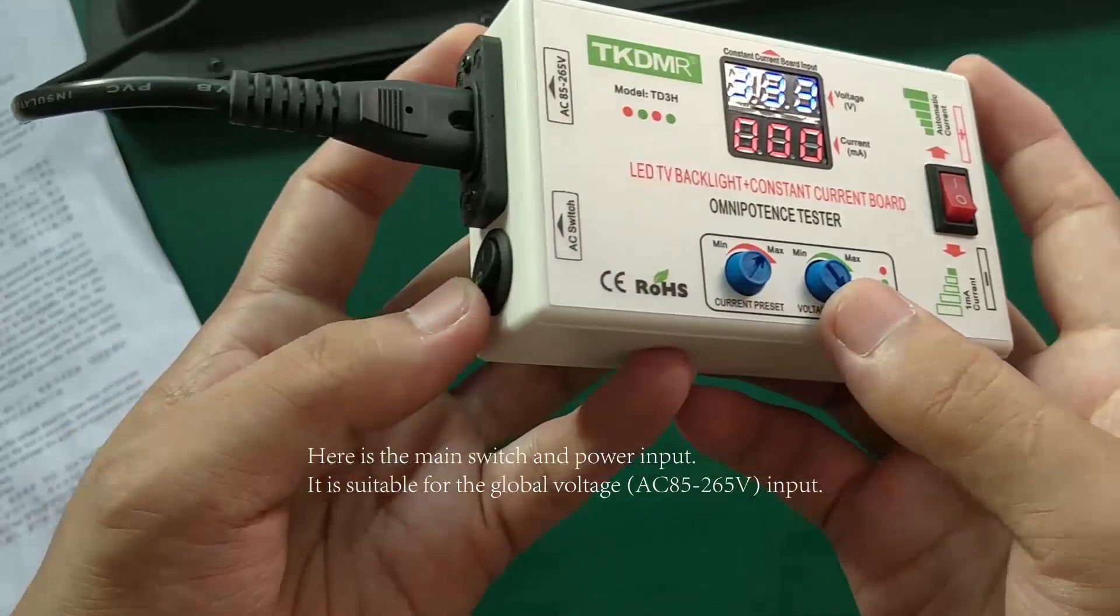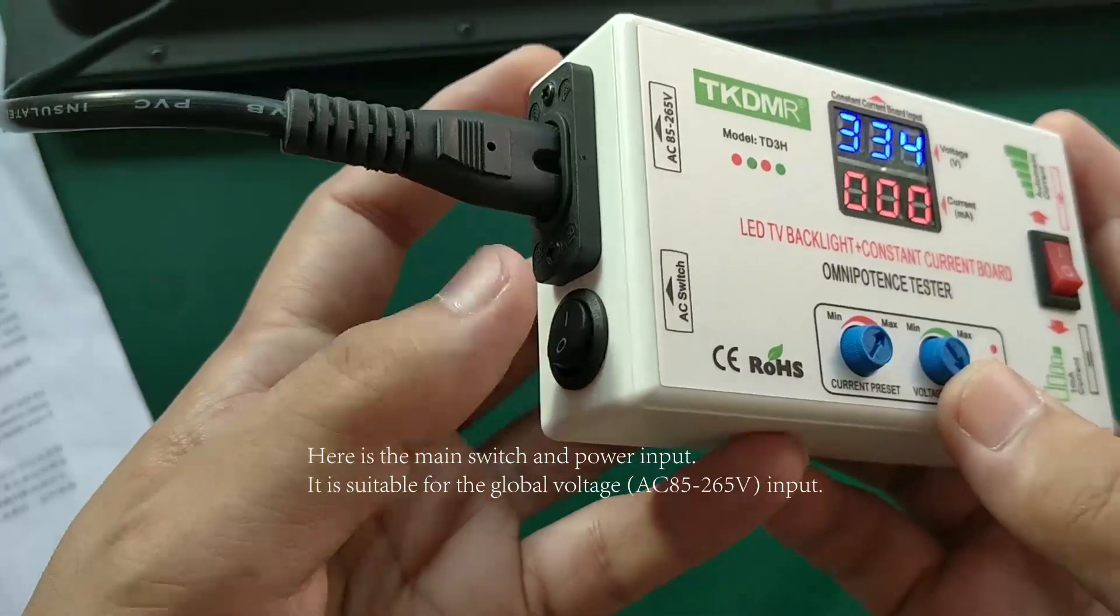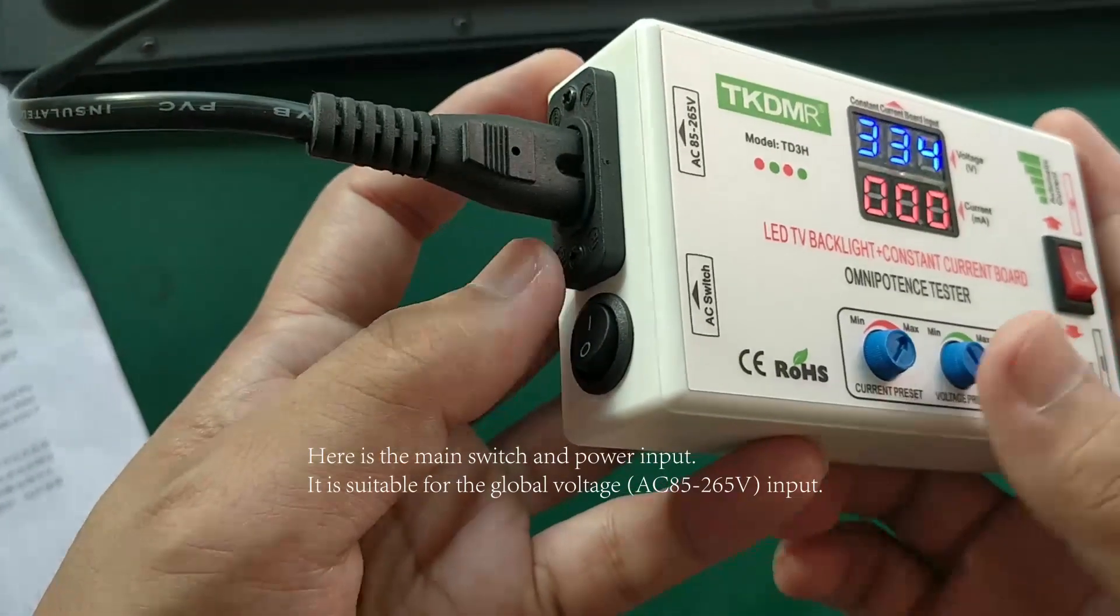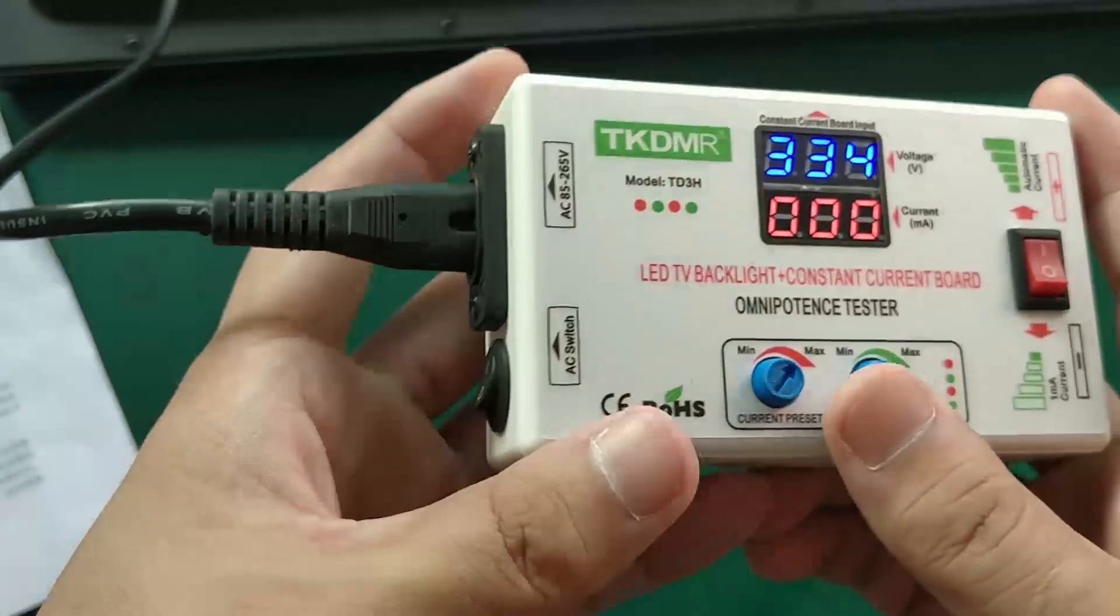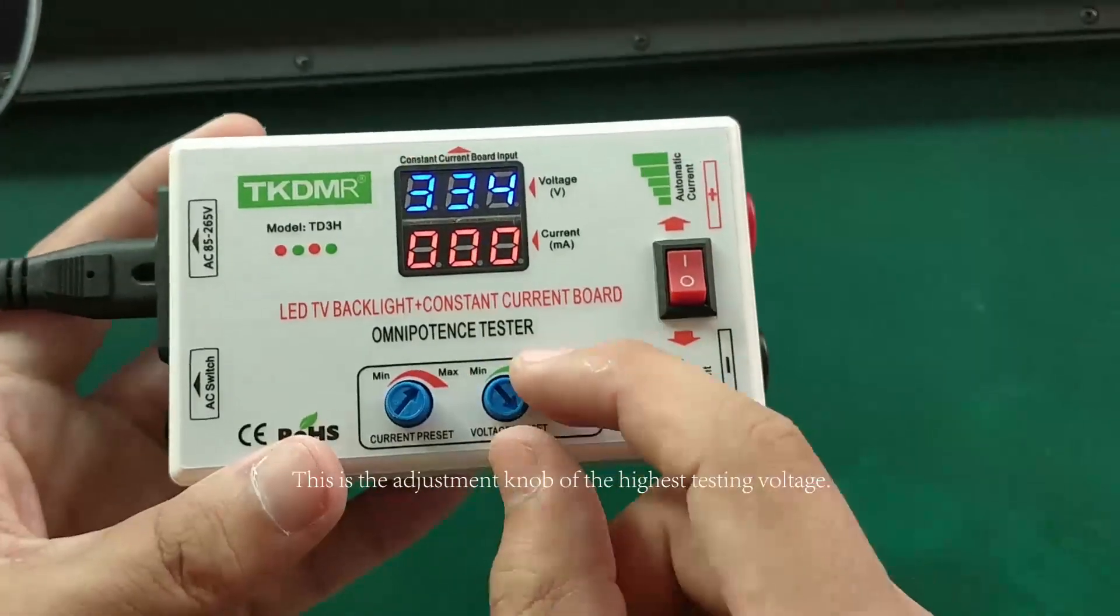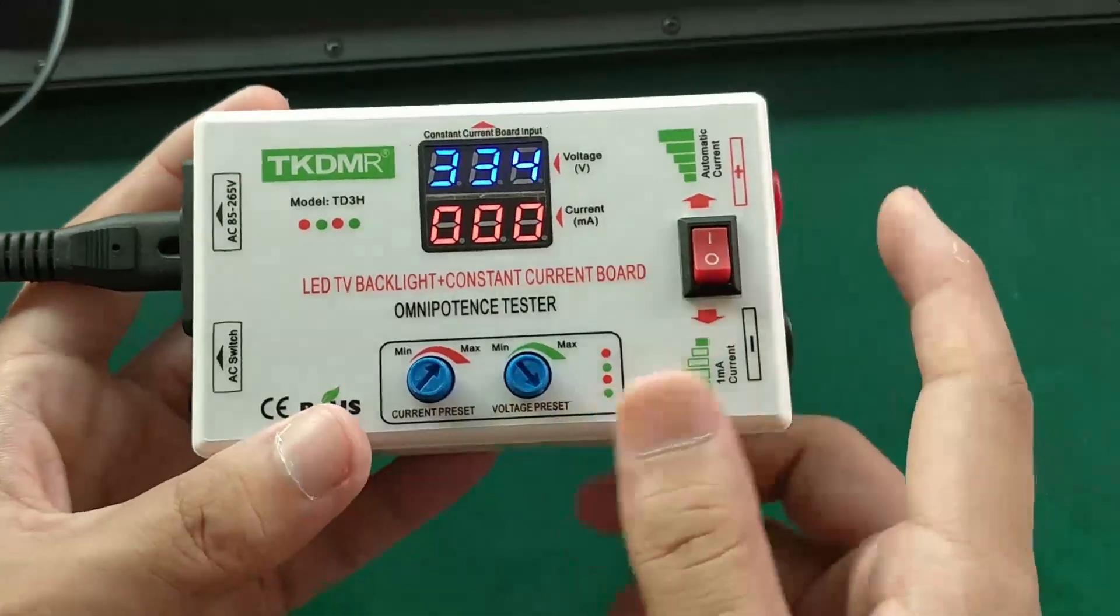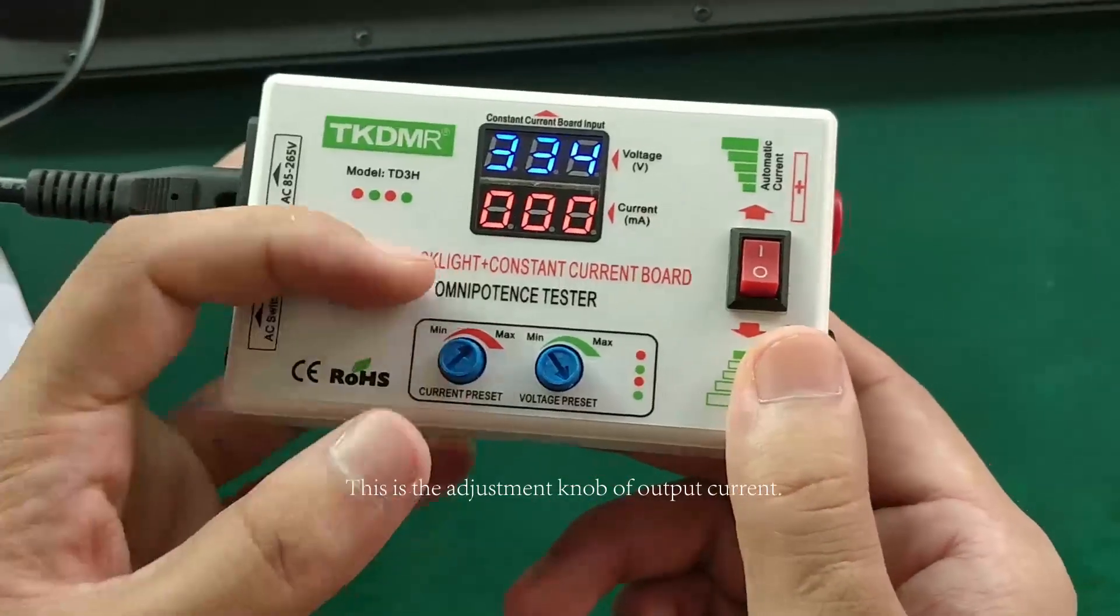Here's the main switch and power input. It is suitable for the global voltage AC85 to 265 input. This is the adjustment knob of the highest testing voltage. This is the adjustment knob of output current.